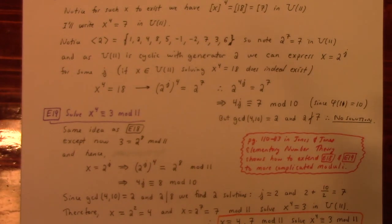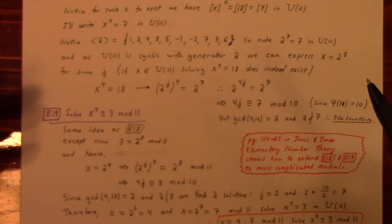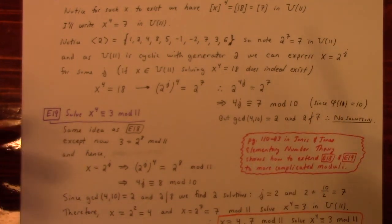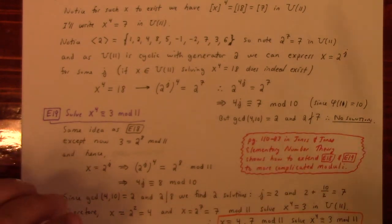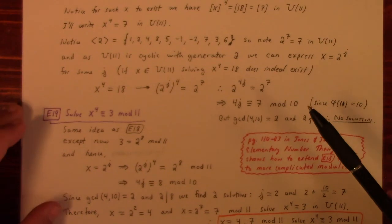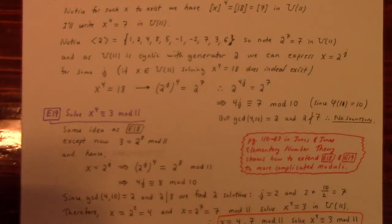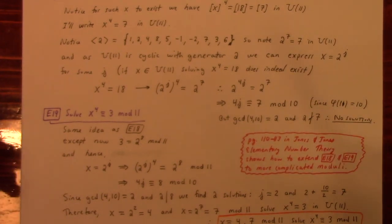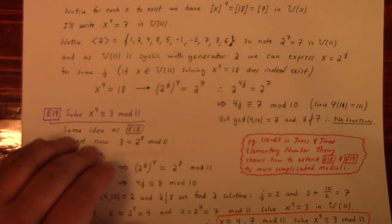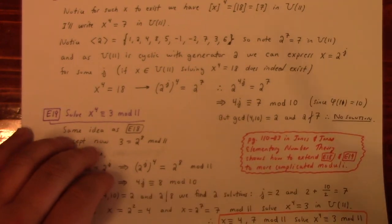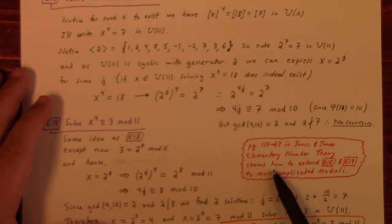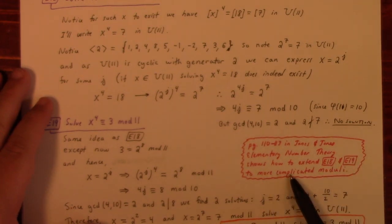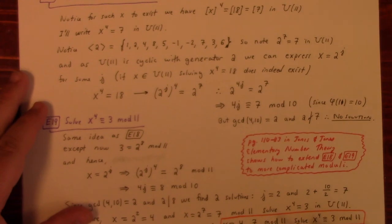This is a powerful technique: if U_N is cyclic, we can write any x we're looking for as a power of the generator. Substituting x = g^J replaces the nonlinear congruence with a linear congruence in J — specifically, we can reduce exponents mod the Euler phi function of N. This is much easier than trying to solve a quartic congruence directly. For more complex moduli, see pages 110–113 in Jones and Jones.